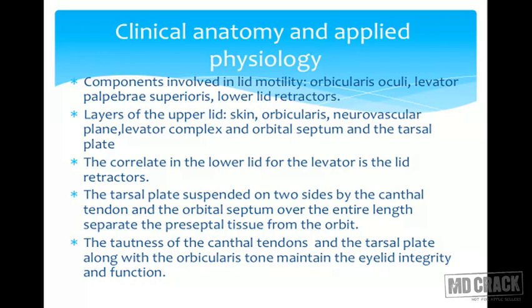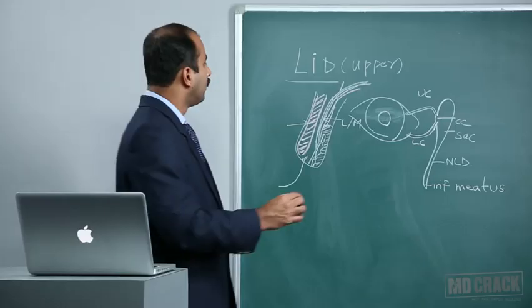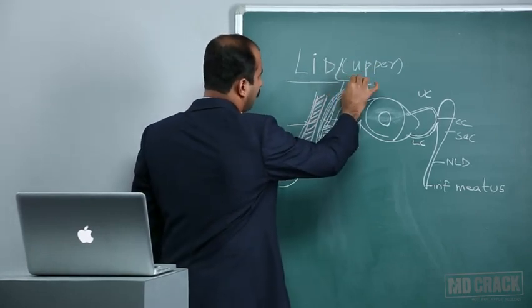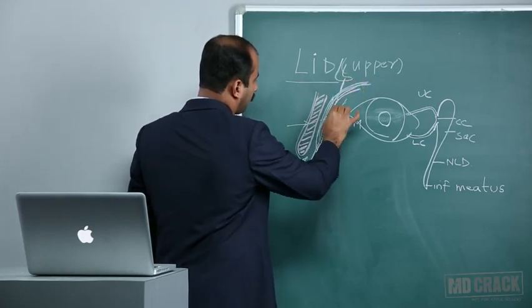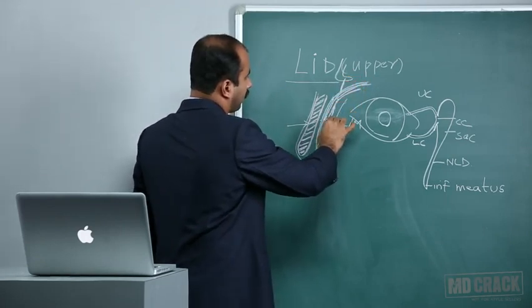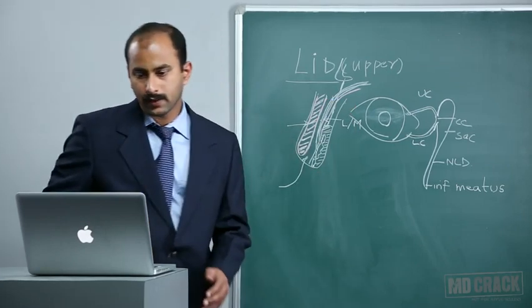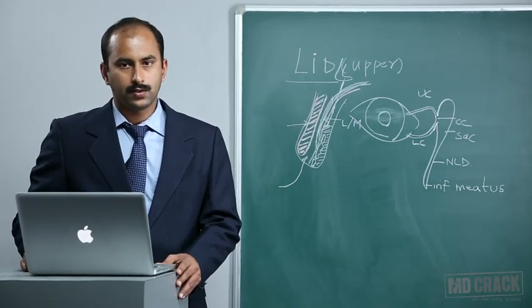The layers in the upper lid are the skin, orbicularis, neurovascular plane, levator complex, orbital septum, and tarsal plate. The tarsal plate is suspended on two sides by the canthal tendon and the orbital septum over its entire length, separating the preseptal tissue from the orbit. From the orbital margin we have the orbital septum connecting to the tarsal plate.